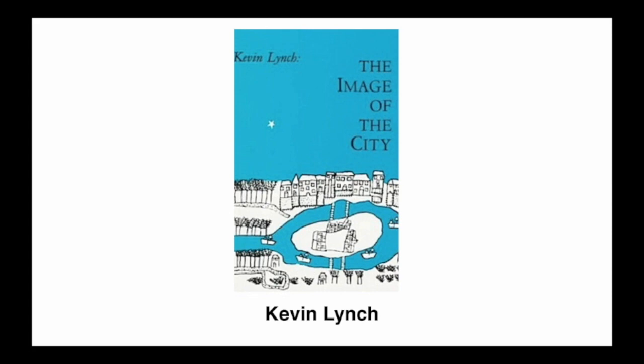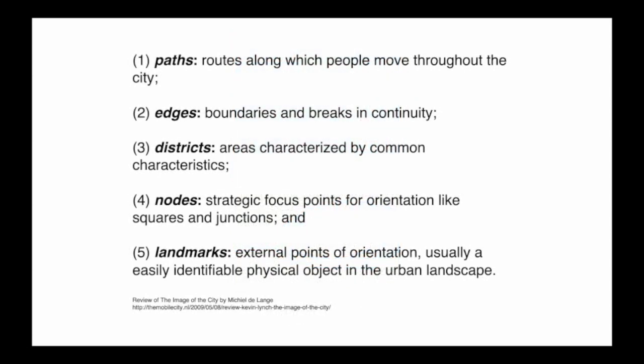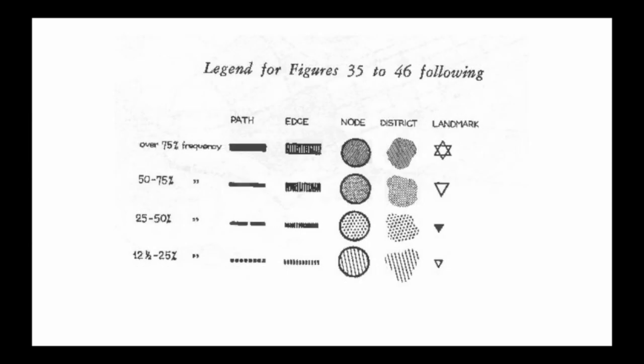Kevin Lynch is an author, urban planner, and urban designer who wrote a book called Image of the City in 1961. He argued that city imageability — the way to read one city versus another — could be illustrated through five particular elements: paths, edges, districts, nodes, and landmarks. If you started to map those out, you could read one city versus another. He used a simple diagramming method in the 1960s — interestingly using the Star of David for landmarks — with additional tones and lines to create a mapping language.